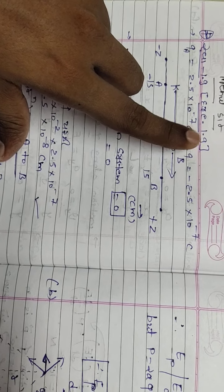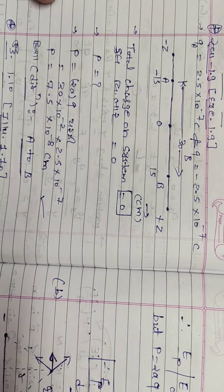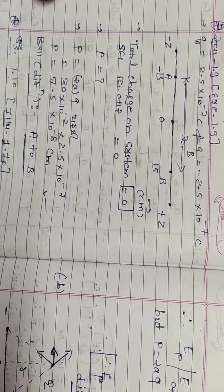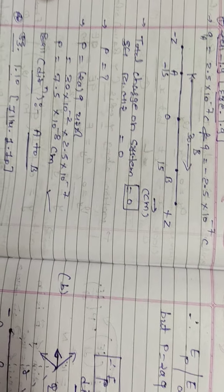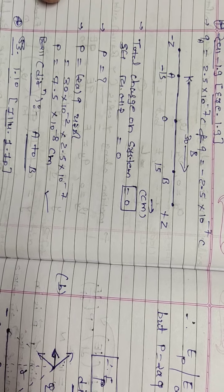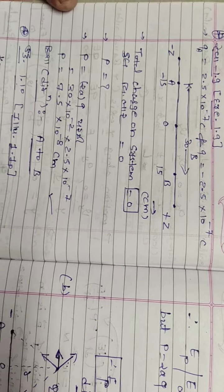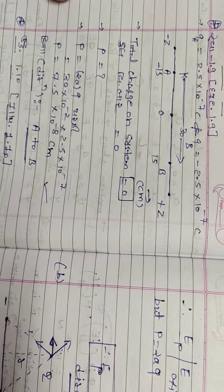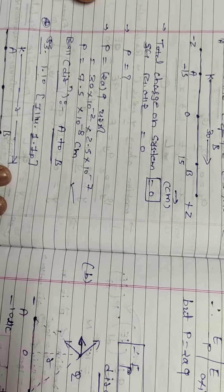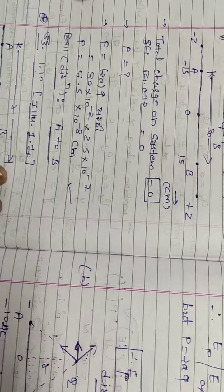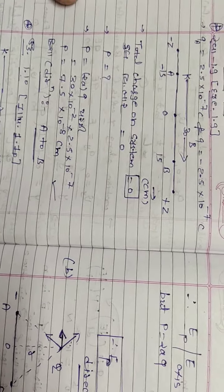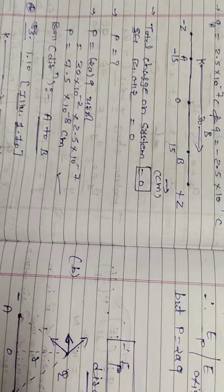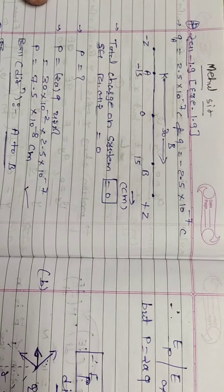So these three numericals use the fundamental electric dipole moment formula: p equals 2a into q. We also use E at axis, E at equator, and the torque formula tau equals p·E·sin theta. These are the concepts we are going to use today.